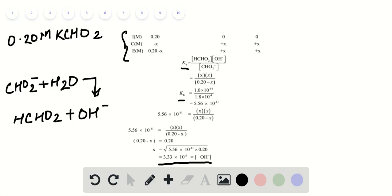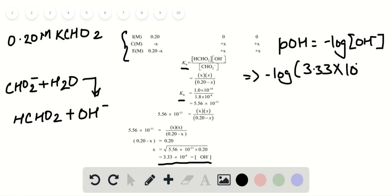From that we determine the pH. POH equals negative log of the OH negative concentration, which means negative log of 3.33 × 10^-6, giving POH equals 5.48.